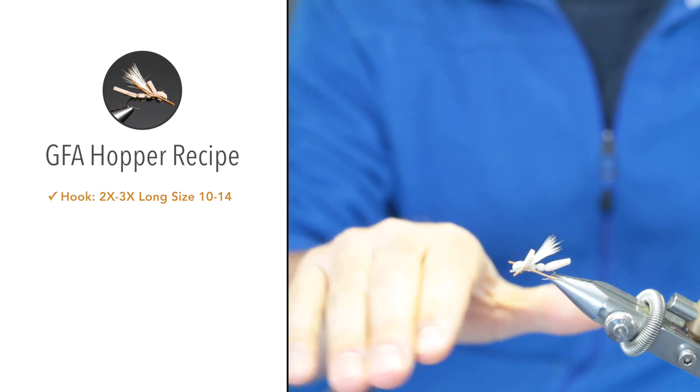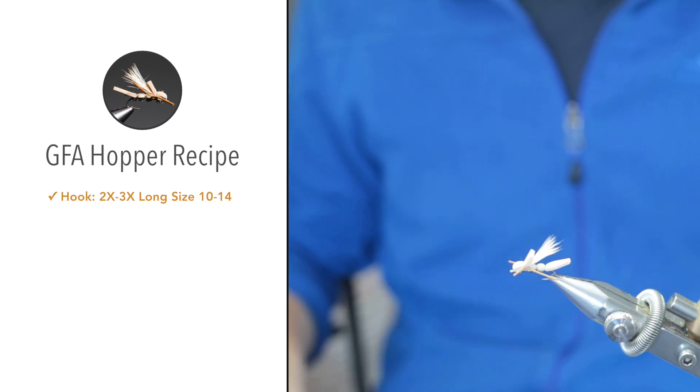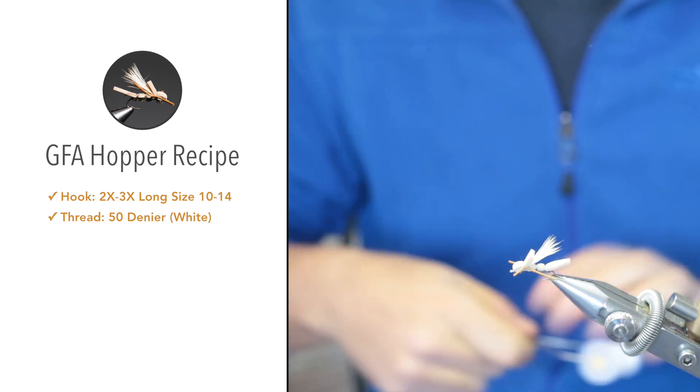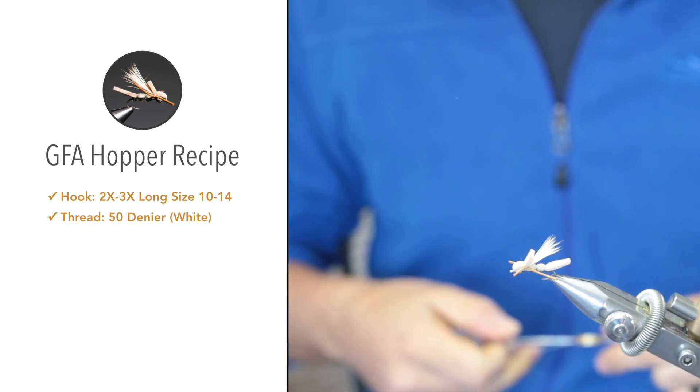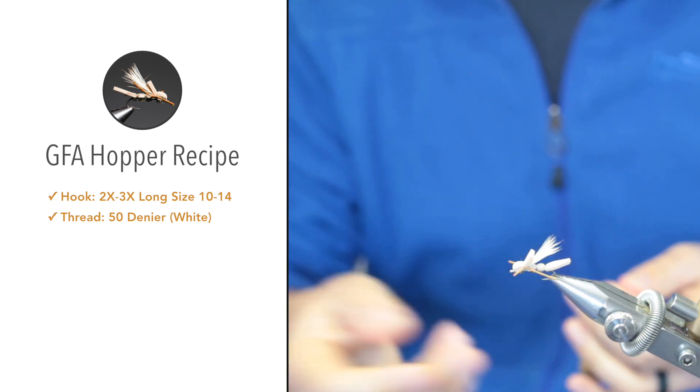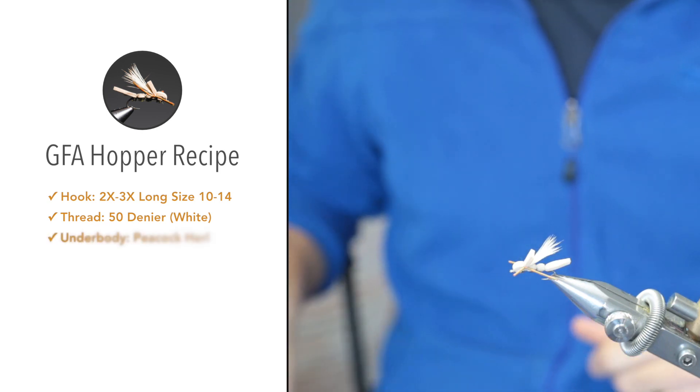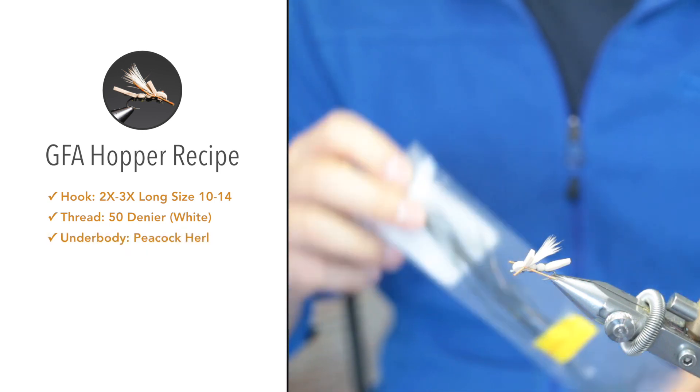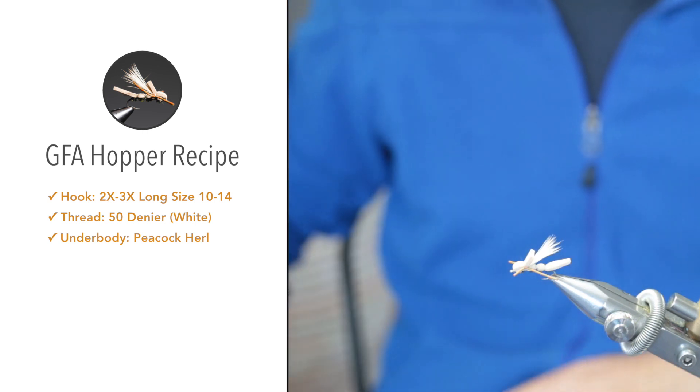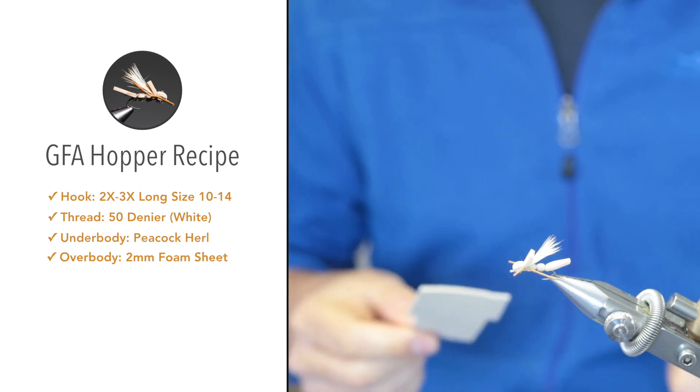For thread I'm using Semperfli Nano Silk 50 denier in white. This stuff is very strong and when you twist or untwist it, it will open the thread and doesn't cut the foam. For the underbody, a couple of fibers of peacock herl. I'm running out so I'll soon have to buy some more.